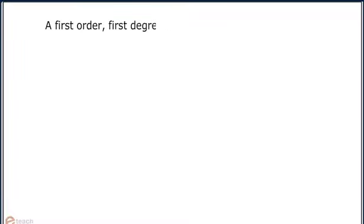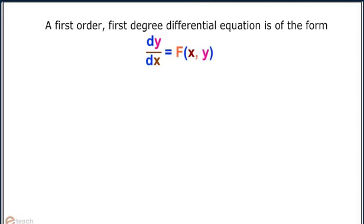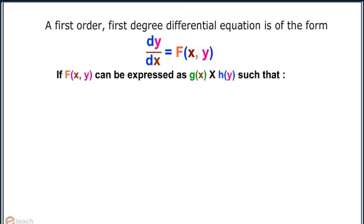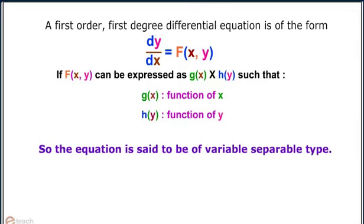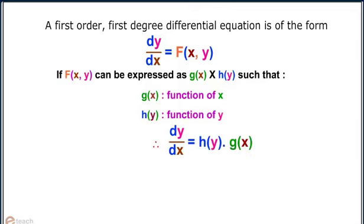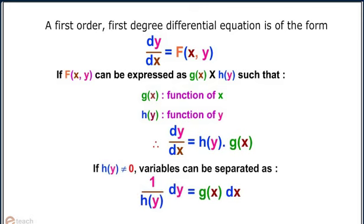A first-order, first-degree differential equation is of the form dy/dx = f(x, y). If f(x, y) can be expressed as a multiplication of explicit functions in x and y, then dy/dx = h(y) · g(x). If h(y) is not equal to 0, variables can be separated as (1/h(y)) dy = g(x) dx. Let's understand the application of this technique with the help of the following example.